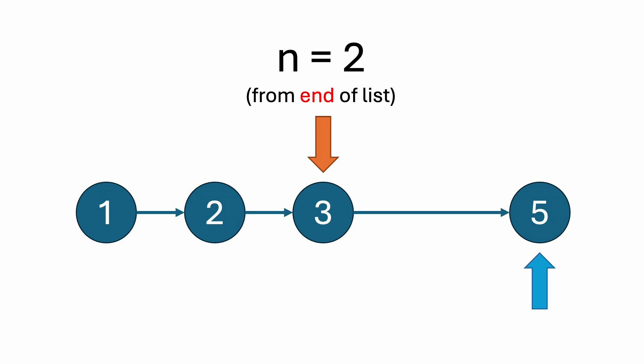In the worst case, each pointer will traverse the entire list once, so this runs in O of n time, and we'll only ever need two extra pointers, so it's also O of one space.